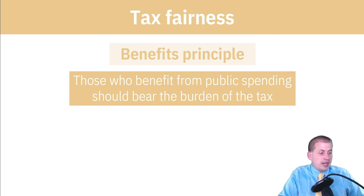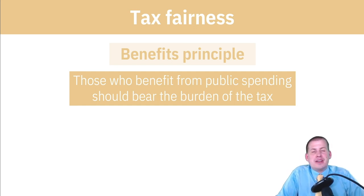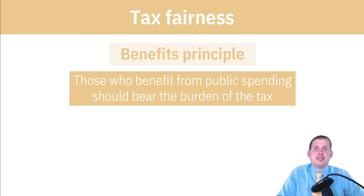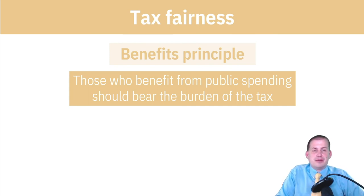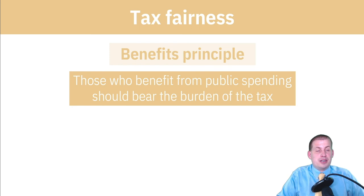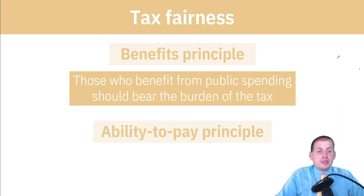The benefits principle isn't typically used as a universal justification for taxation. When applied to programs like Medicare and Medicaid, it becomes problematic: the people who benefit most from Medicaid are the poorest, and we don't want to make the poorest pay for their benefits — that's the whole reason those programs exist. If we apply the benefits principle universally, the programs that help the poor would be underfunded and inaccessible to the poor.